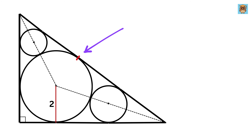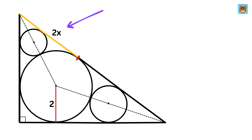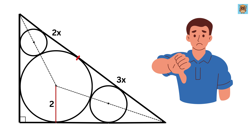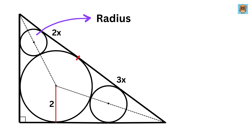The point at which the big circle touches the hypotenuse divides the segment in the ratio 2 to 3, meaning if this part is 2x, then the other part is 3x. We are given nothing else. Our job is to find the radius of the smaller circle using the information provided.